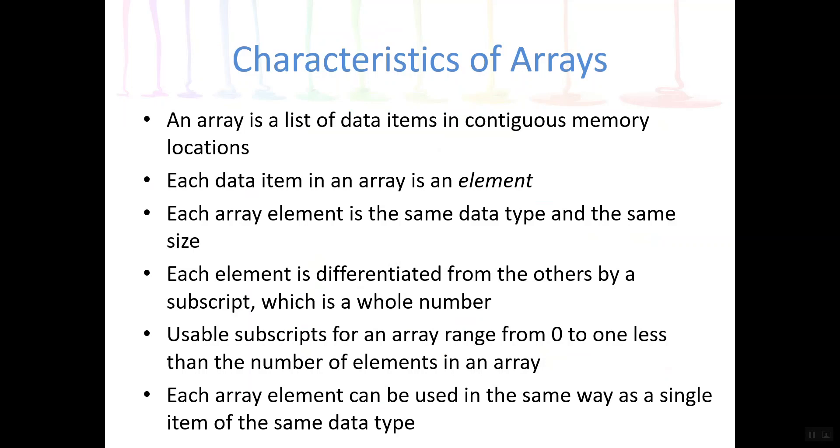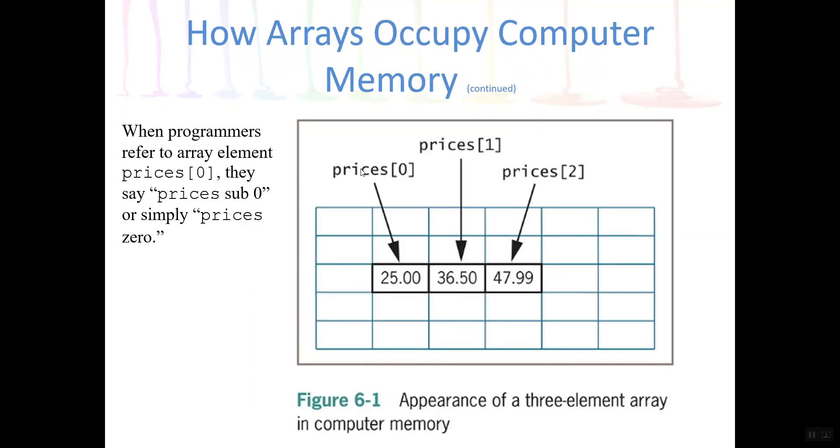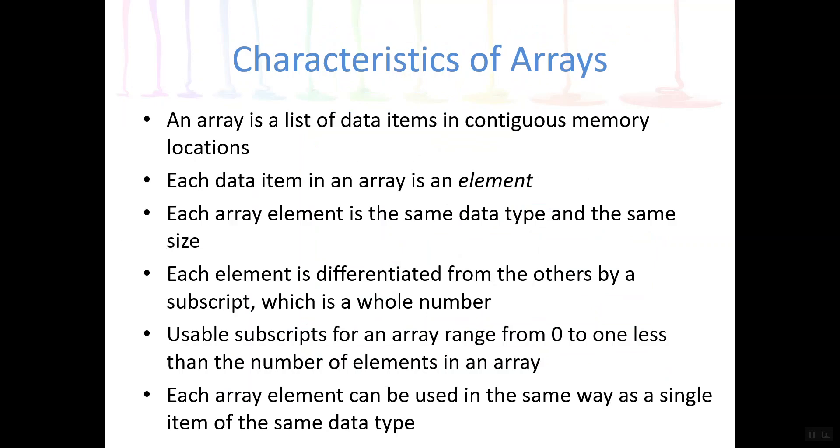Each element is differentiated by an index or a subscript. And we saw that we could use that subscript in an array access expression right here. Here's the subscript zero. We can use that to access an element in the array. And usable subscripts start with zero, always zero. The first element always has an index, i.e. subscript of zero. And each array element can be used in the same way as a single item of the same data type. In other words, each price was itself a num data type that we could work with as any other number.